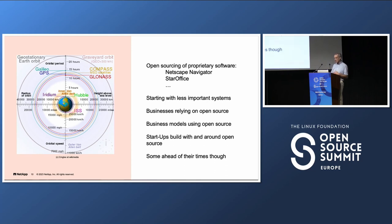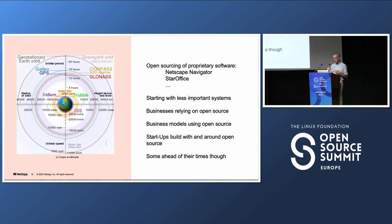Traditional companies also started out using open source, usually from the outside — from the satellite systems in an IT perspective. People started using open source for the smaller systems, the ones that are not so important, to get some experience. And eventually, open source moved into the inner core and replaced, for most companies, the most important pieces of proprietary software they had.